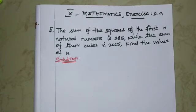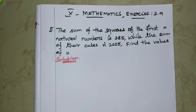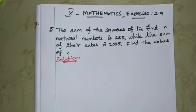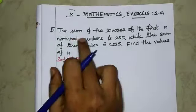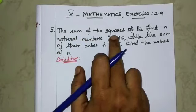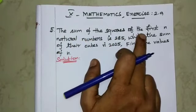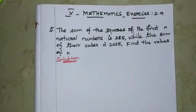There may be one or more values. Here, n is the number of terms — we need to find the sum of the squares of the first n natural numbers.